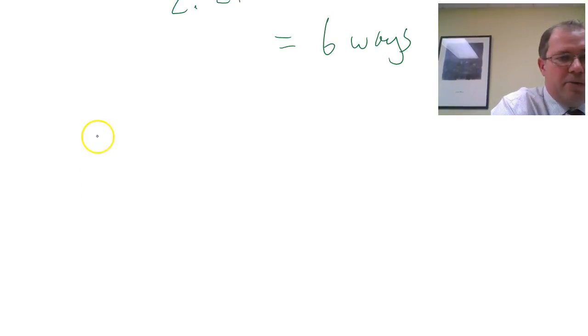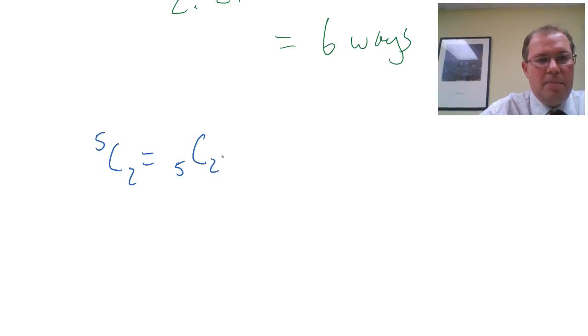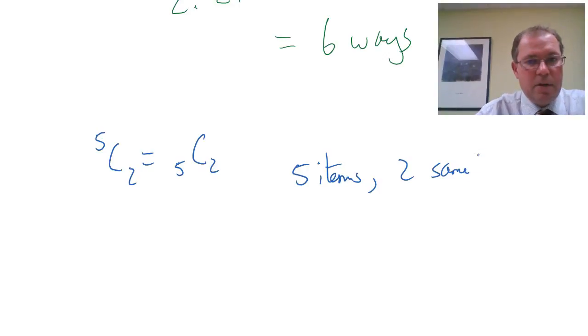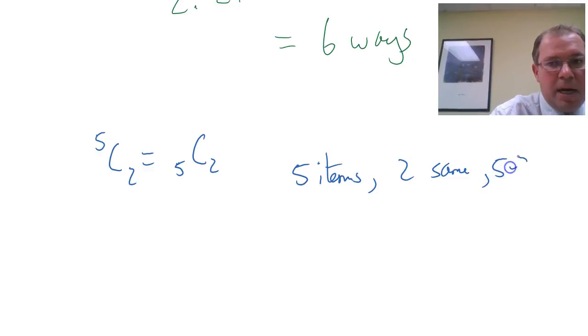So if we consider 5 choose 2, which sometimes you see as 5 choose 2 on a calculator, it means we have 5 items in total, and 2 of them are the same. Now, because we only have 2 different items, a and b, if 2 are the same, then of course 5 minus 2, 3 must be the same.